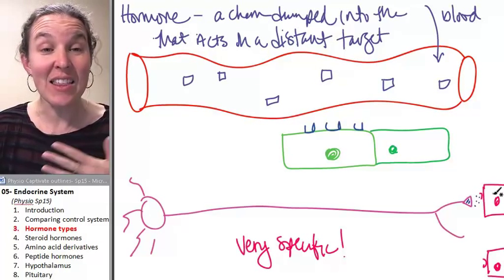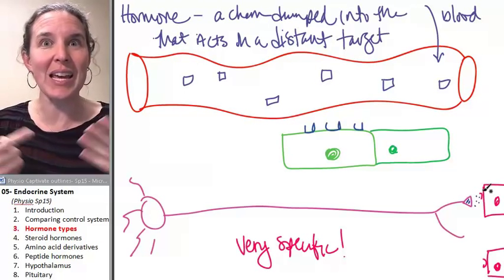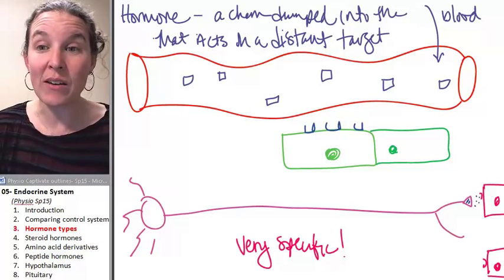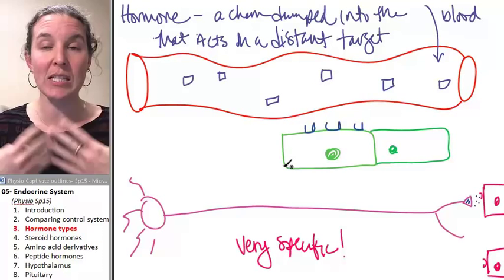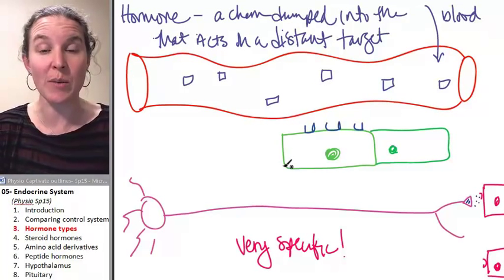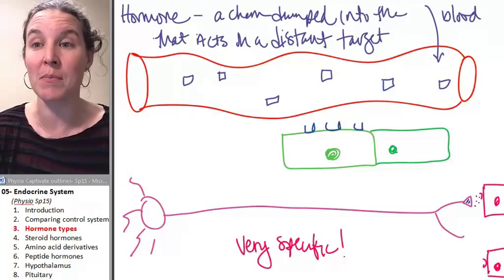So in that sense, the hormone, the endocrine system can be very, very specific. And only folks who are expressing the genes that produce these specialized receptors will be able to make something happen.